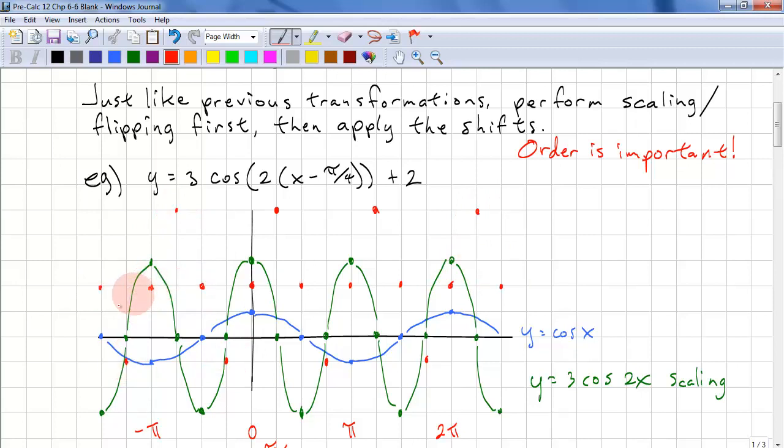Let's just smoothly join our points. And we're done. Y equals 3 cos of 2 of x minus pi over 4 plus 2. This is our translations.